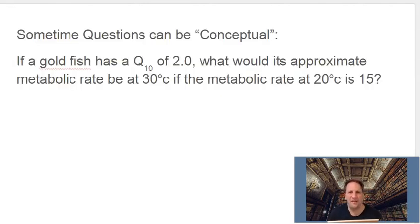So sometimes instead of getting a graph or getting a data table or numbers, you may get a question that's conceptual based. It may ask you to really think about what Q10 means. Don't forget, if the Q10 is equal to 4, that means it quadruples for every 10 degrees. If the Q10 is equal to 3, that means that the metabolic rate triples every 10 degrees. And if the metabolic rate doubles over 10 degrees, guess what? The Q10 is 2.